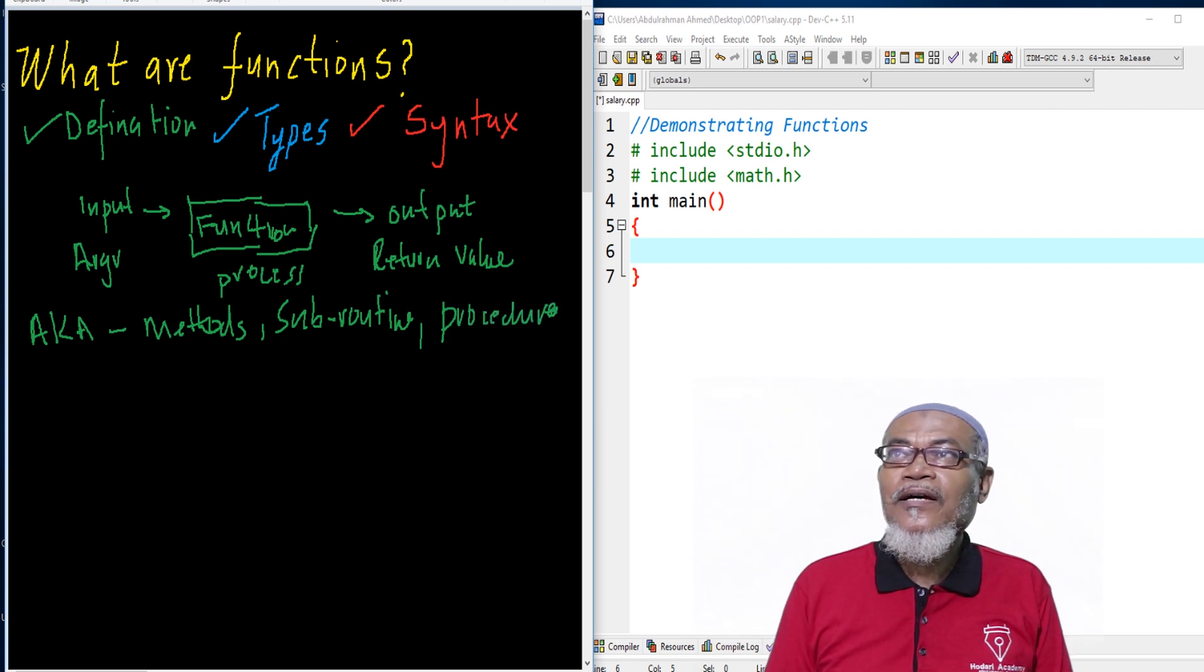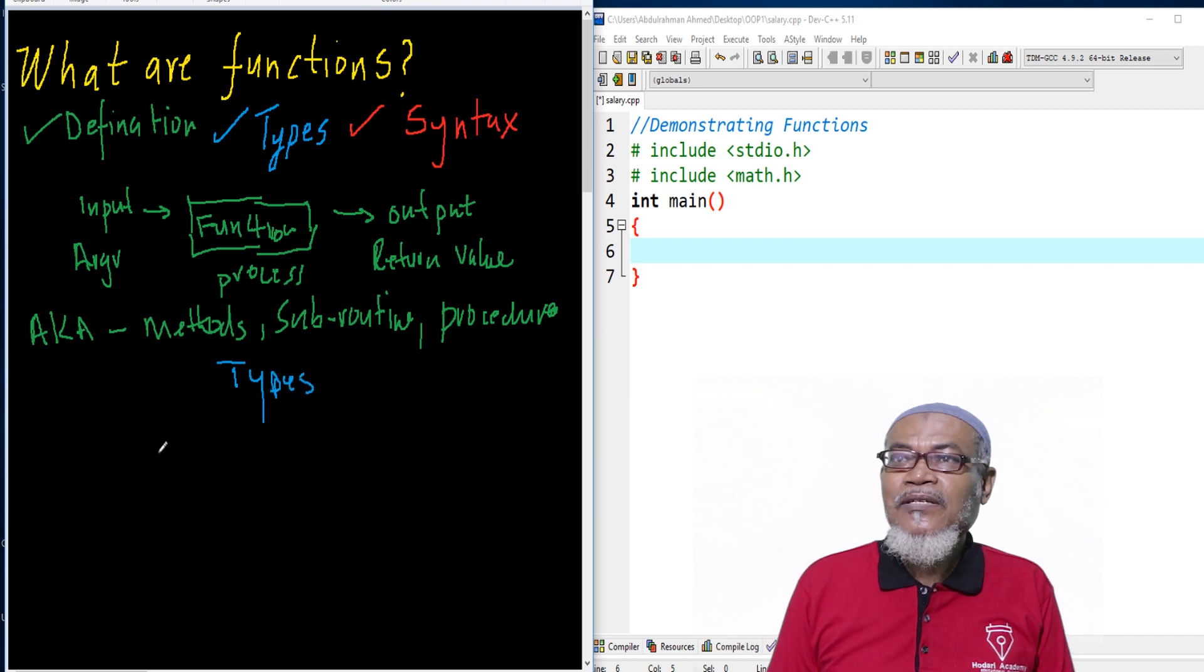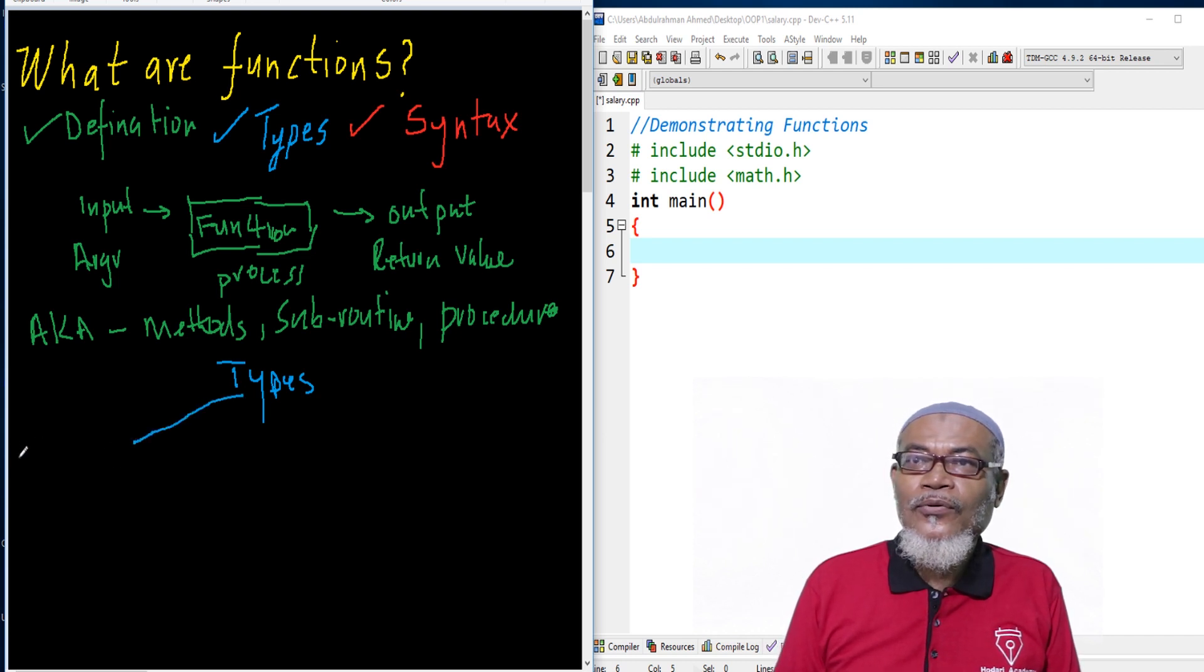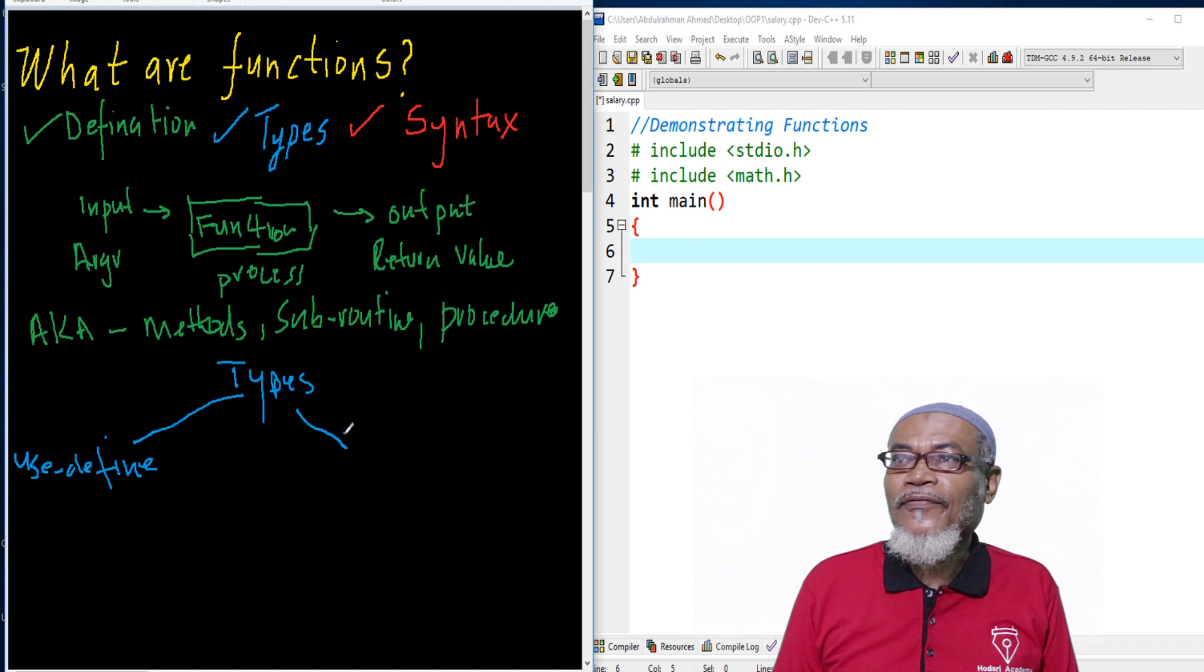That leads us to see what are the types of a function. Basically, functions are divided into two. We have what you call user-defined function and what we call standard library function.